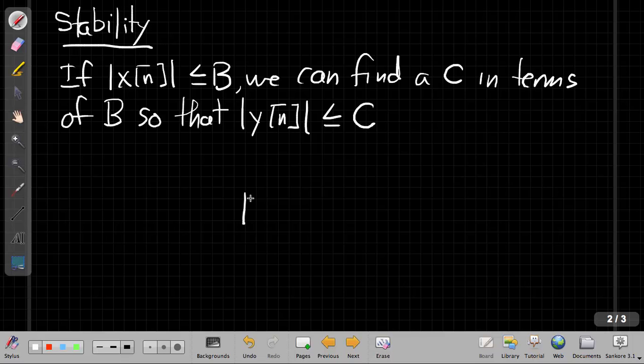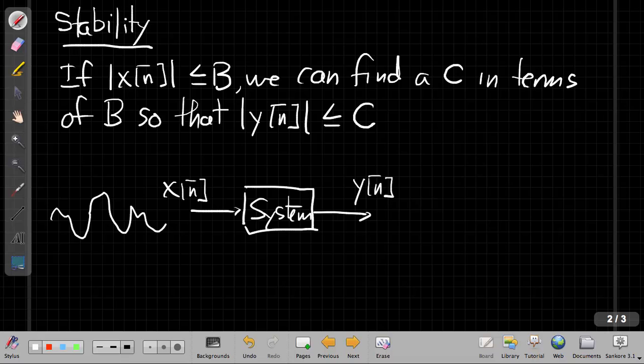So if we maybe take that a little more graphically, here's my system down here. So I've got x[n] going in and y[n] coming out. What we're saying is that if I've got a signal x[n] as the input, and the only thing you really know about it is that its amplitude is always between plus or minus B, so there's some upper and lower limit on the amplitude. If it's a stable system,